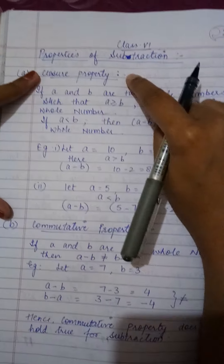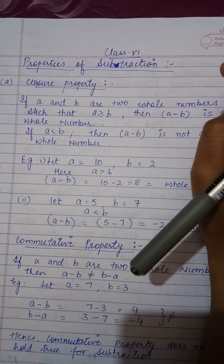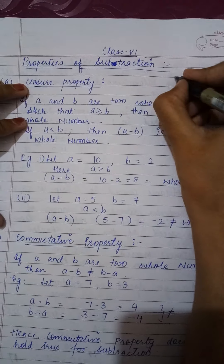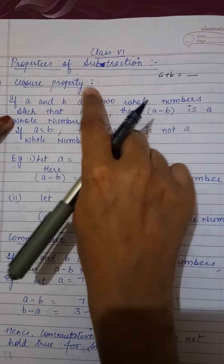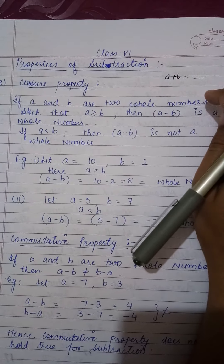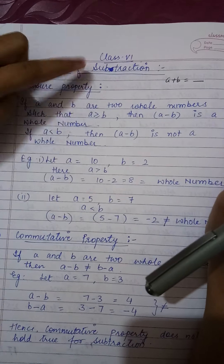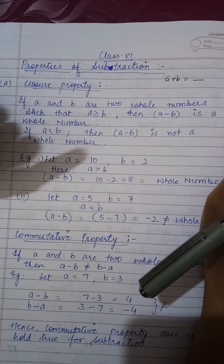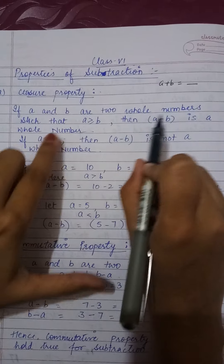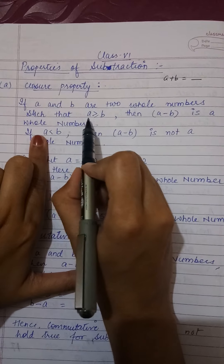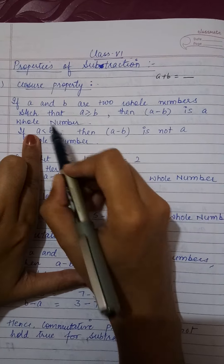The first is closure property. In addition, if we had added two whole numbers then the answer should also be a whole number. But this closure property is not satisfied in the case of subtraction. If it is satisfying, then it has a certain condition. If a and b are two whole numbers such that a is greater than or equals to b, then a minus b is a whole number.